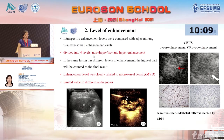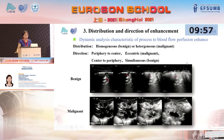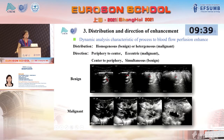Enhancement level can be divided into four levels: non-enhancement, hypo-, iso-, and hyper-enhancement. It is related to microvascular density but has limited value in differential diagnosis. The third point is distribution and direction of enhancement. We typically see homogeneous enhancement in benign lesions and heterogeneous enhancement in malignant lesions. Regarding direction, we see peripheral-to-center eccentric enhancement in malignant lesions, and central-to-peripheral or simultaneous enhancement in most benign lesions.